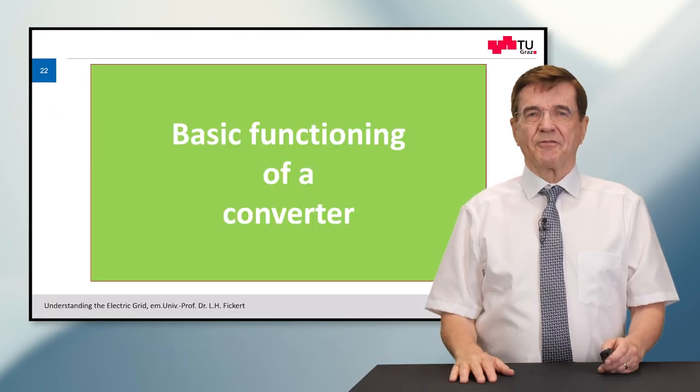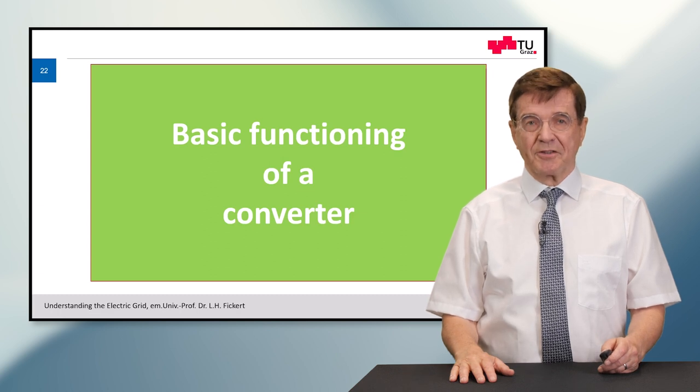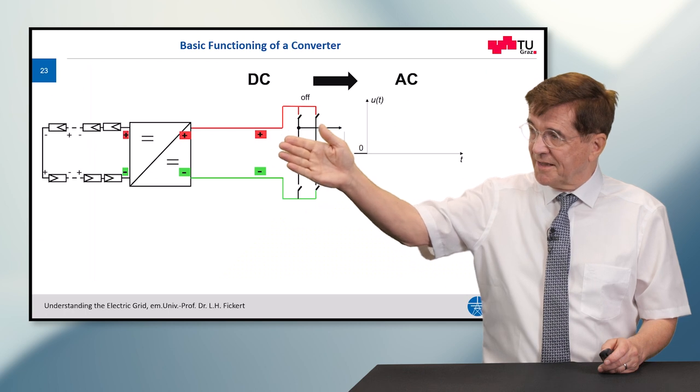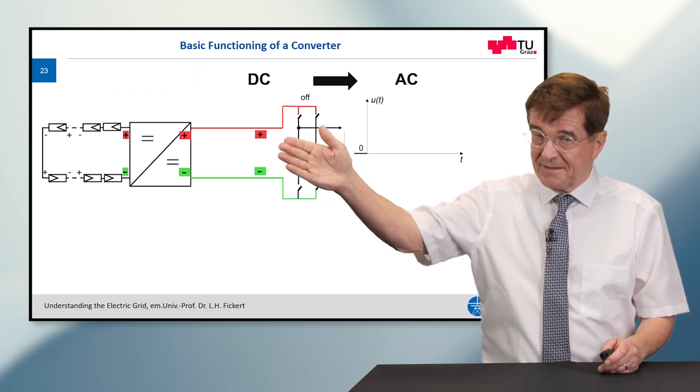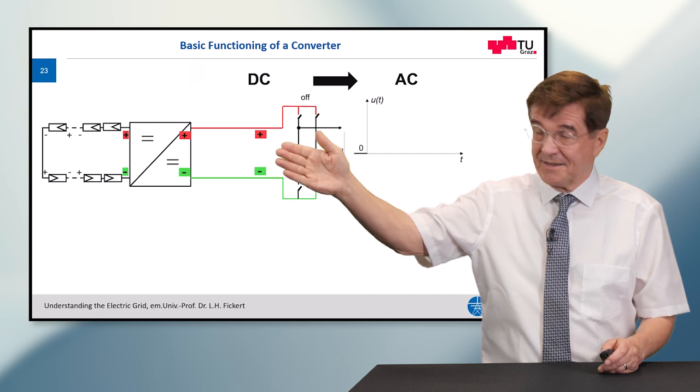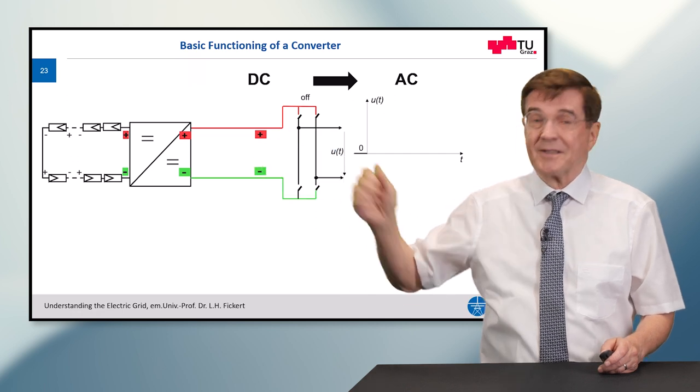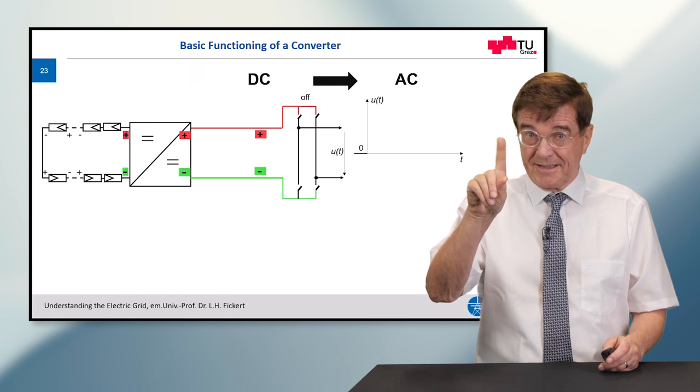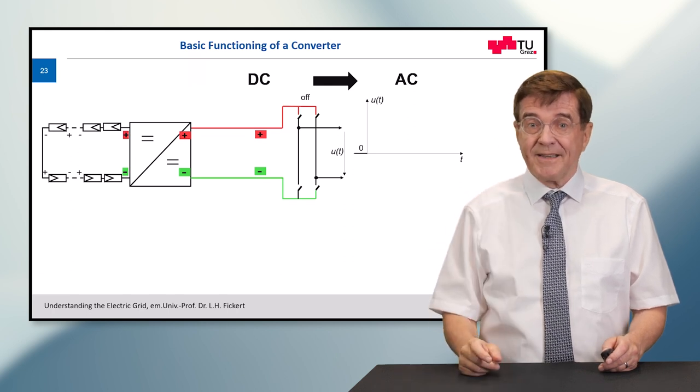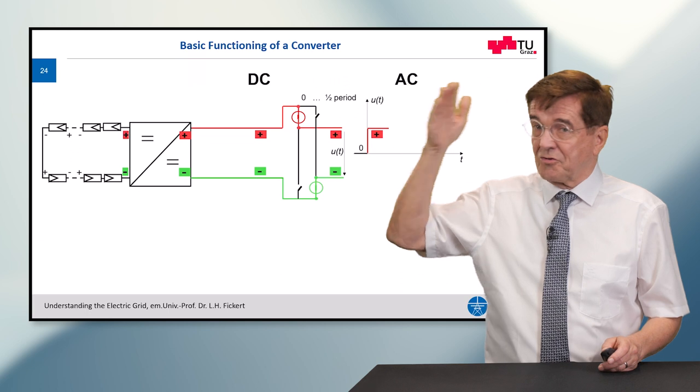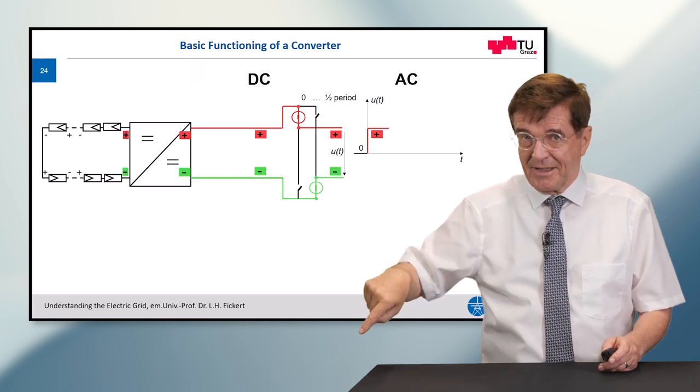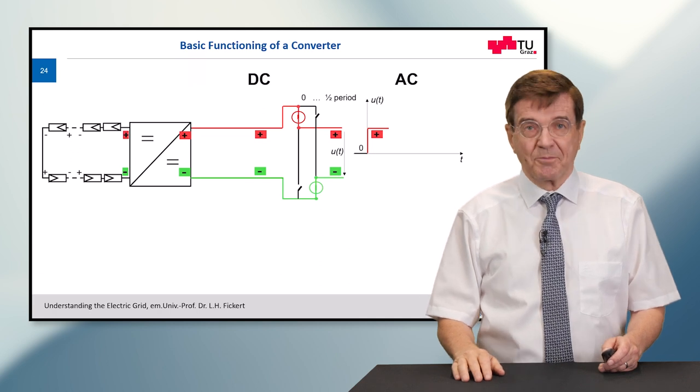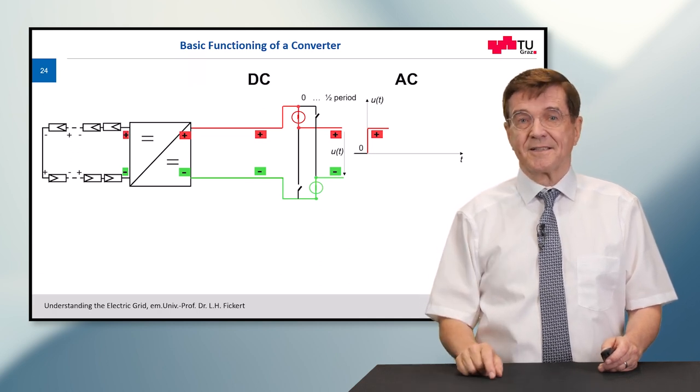So the basic function of such a converter is demonstrated on a typical PV plant. To the left side you have the PV cells which give off a DC current. This DC current is going through a switching machine with these little switches. You will soon see how they move. And the output now, for example if the top left switch and the bottom right switch are closed, is the positive voltage at the output which goes into the AC system.